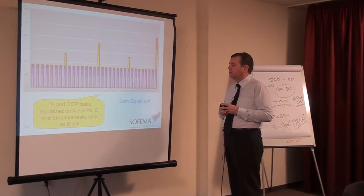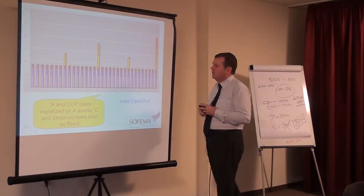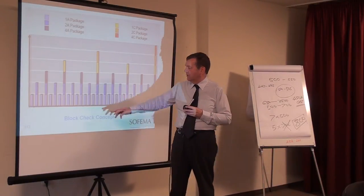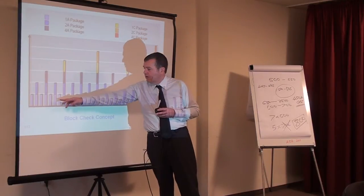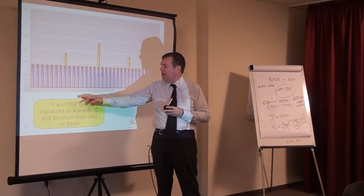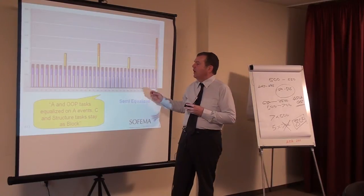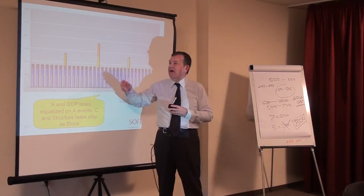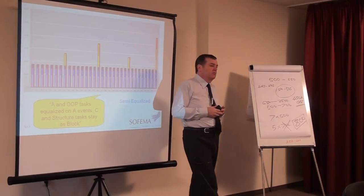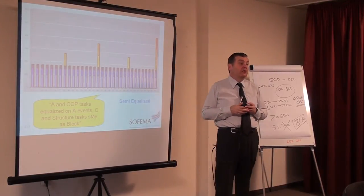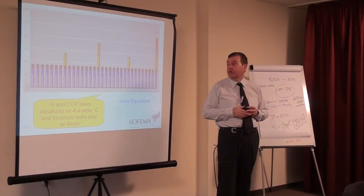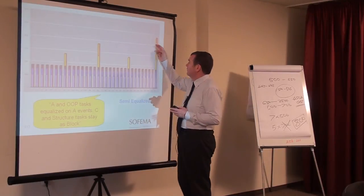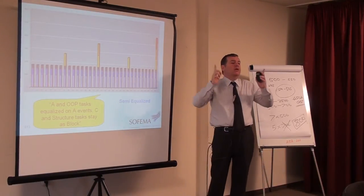What we've done here, we've taken the A checks - the 1A, the 2A, the 4A. We've taken the A checks and we've equalized them. So all the A checks are now standard. What that's done is given us a uniform product. But we've still got the C check sitting, poking out.